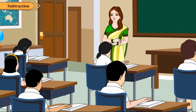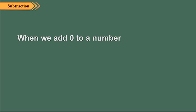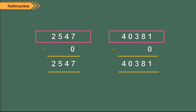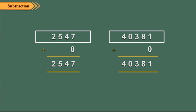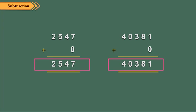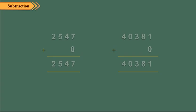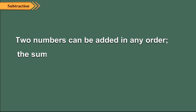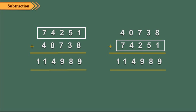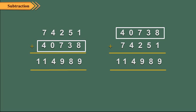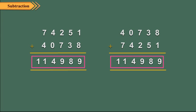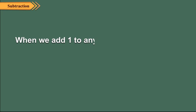Let us now discuss some properties of addition and subtraction. When we add 0 to a number, the number remains the same. For example, 0 added to 2547 and 40381 gives 2547 and 40381 respectively. Two numbers can be added in any order and the sum remains the same. For example, we can add 74251 and 40738 in two ways — as shown, the sum remains the same.